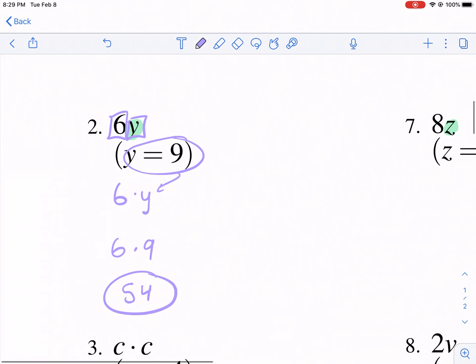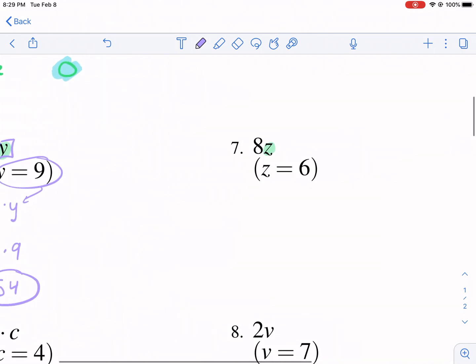So that one is kind of an additional step if you're not comfortable with the multiplication. And over here same deal. So we have 8z. All we need to do is plug in 6 for z. We're going to rewrite it with 6 instead. 8 times 6 is 48. And that's our answer.